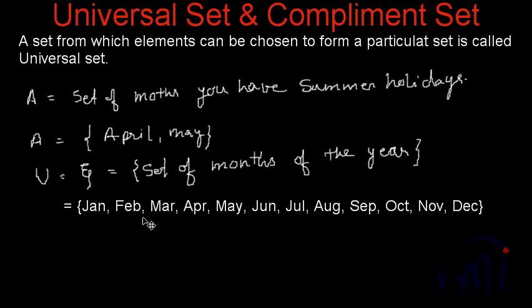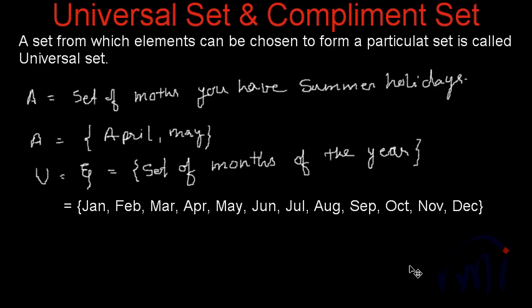The set of all the months in a year is January, February, March, April, and so on. You can take any number of sets from this and form the set of summer holidays in a particular country. So therefore, the set of all months in the year will be called the universal set, which is represented either as capital U or as psi.